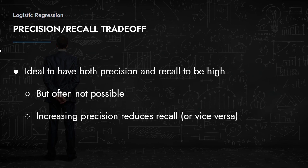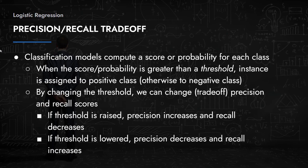There is a precision-recall trade-off: ideally both should be high, but this is often not possible. Increasing precision reduces recall, and vice versa. Classification models compute a score or probability for each class; when this score exceeds a certain threshold, the instance is assigned to the positive class. This threshold is a hyperparameter that controls how sensitive the model is.